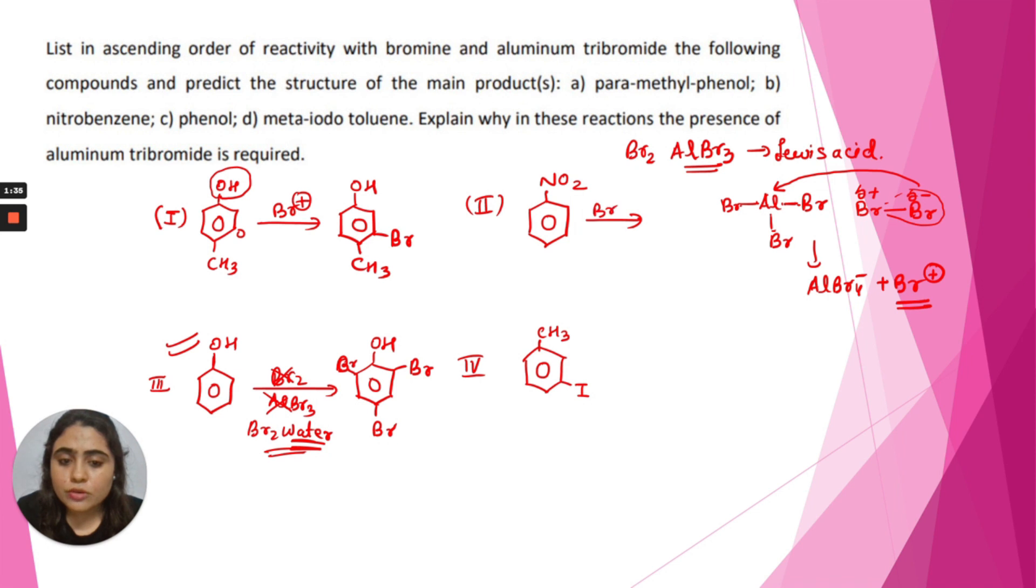Then nitrobenzene. If it reacts with bromonium ion, we know nitro group is a meta-directing group.